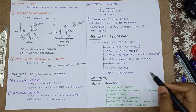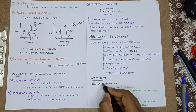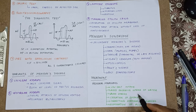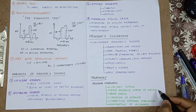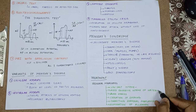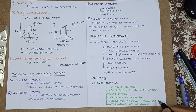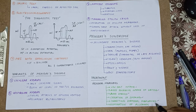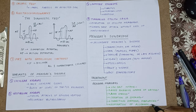The treatment of Meniere's disease. General measures: low salt intake, avoid excessive water intake, avoid stress, cessation of smoking, correcting hormonal imbalance because hypothyroidism can cause Meniere's, and elimination of allergens.